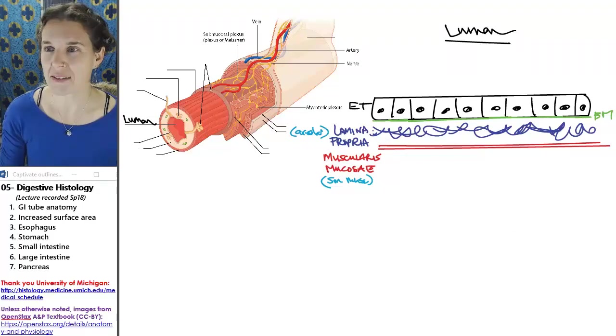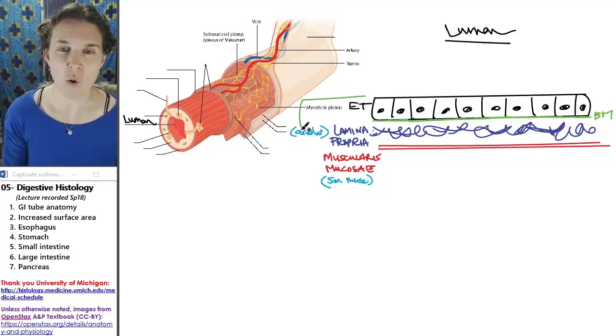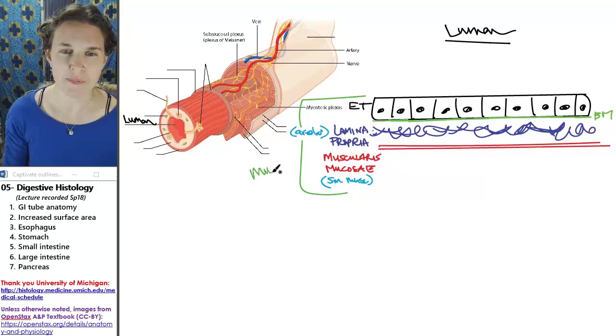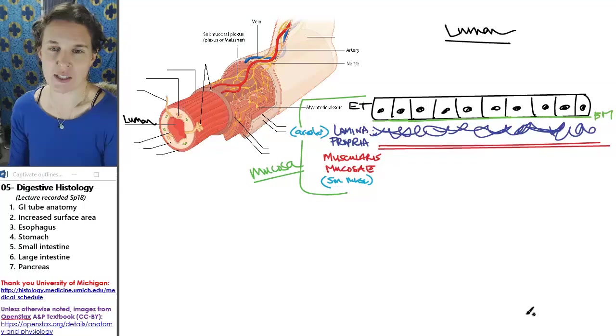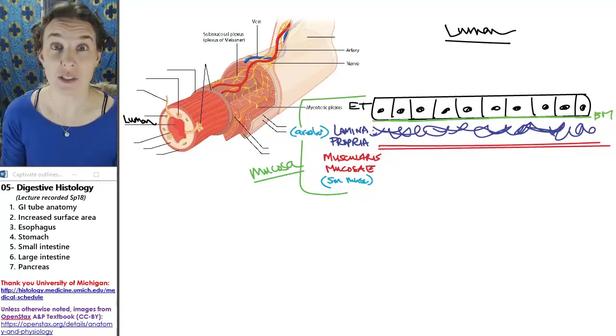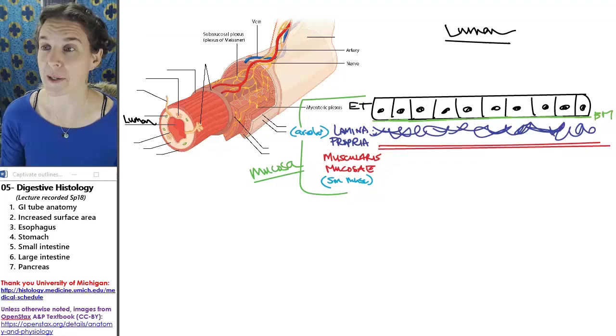Lamina propria was made out of loose connective tissue or areolar connective tissue. Epithelial tissue is made out of epithelial tissue. Most epithelial layers in the digestive tubing are actually simple columnar epithelium. This whole thing is one layer. This whole thing is the mucosa. So that's the first layer of my digestive tubing, the luminal layer.